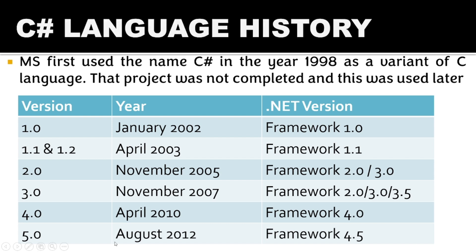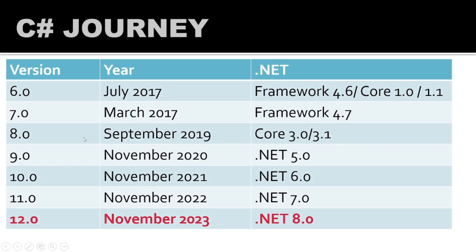C# 5.0 came in August 2012 with Framework 4.5. Version 6.0 was used with Framework 4.6 as well as .NET Core 1.0 and 1.1. From version 8.0 onwards we have .NET Core — version 8.0 came in 2019 with .NET Core 3.0 and 3.1.